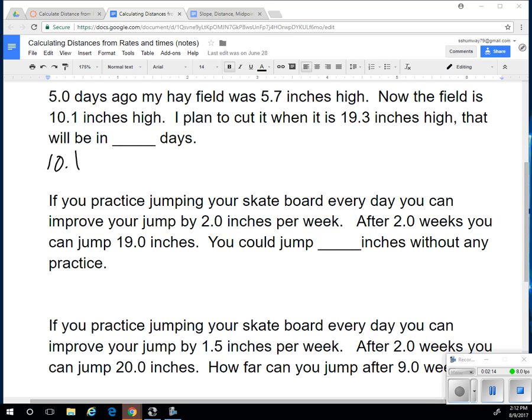So 10.1 minus 5.7. 11 minus 7 is 4, so this drops down to 9, 9 minus 5 is 4. So 4.1 inches in five days. Let's find out what that is per day. So 0.88 inches per day.